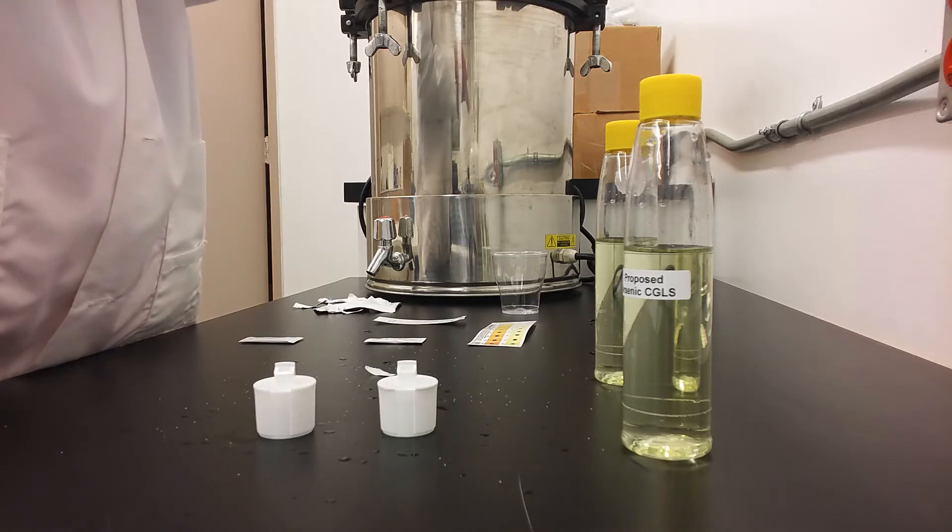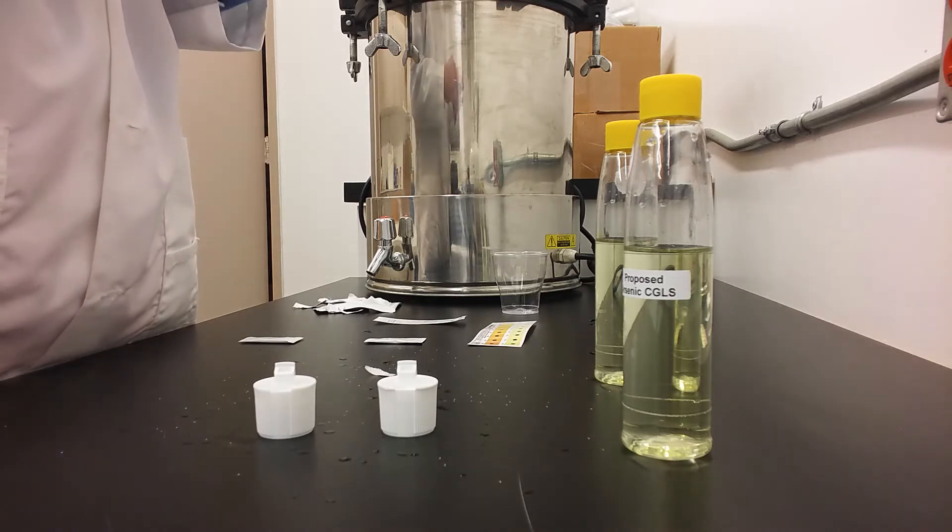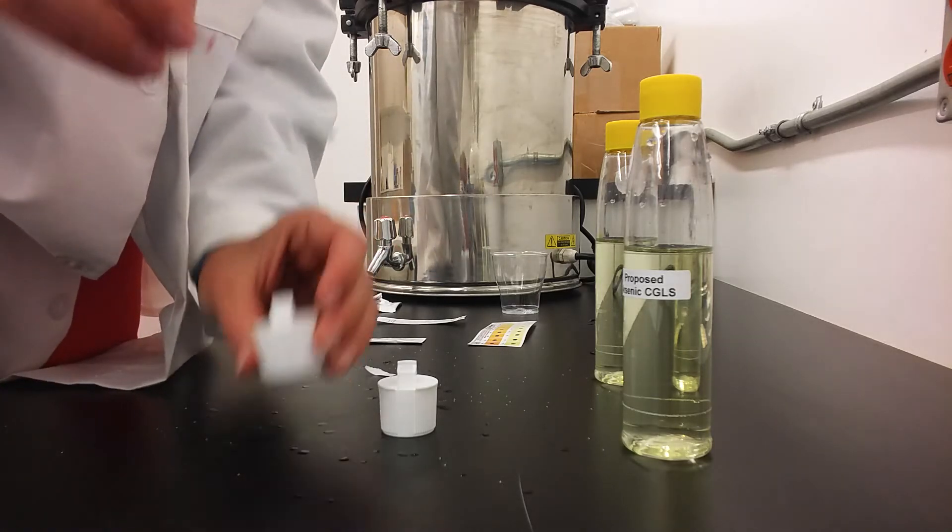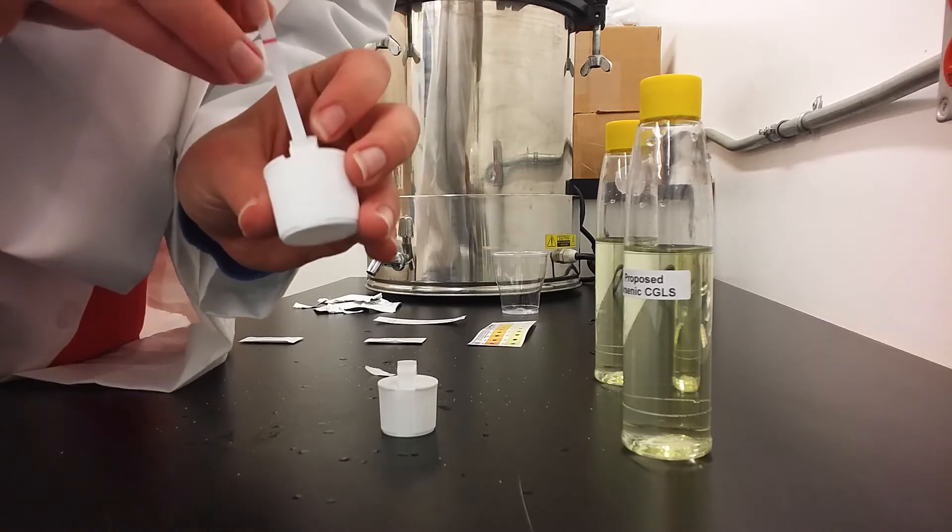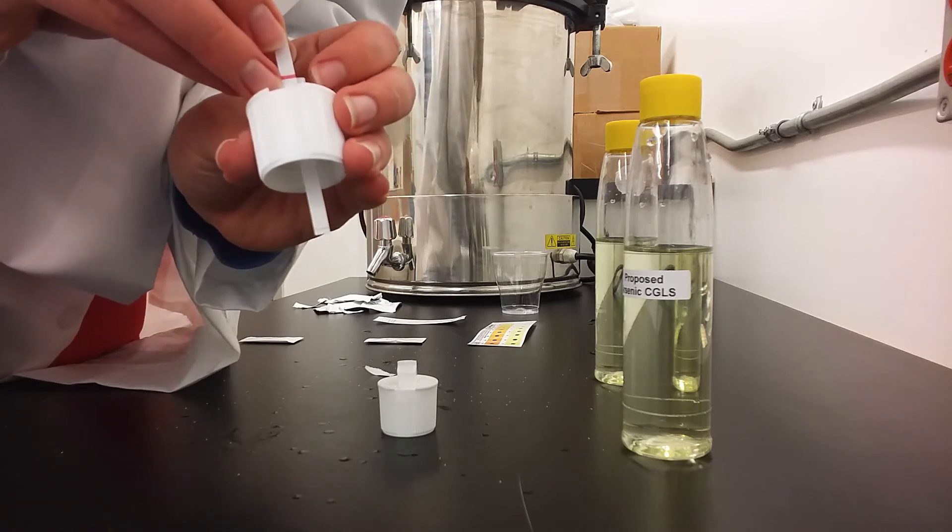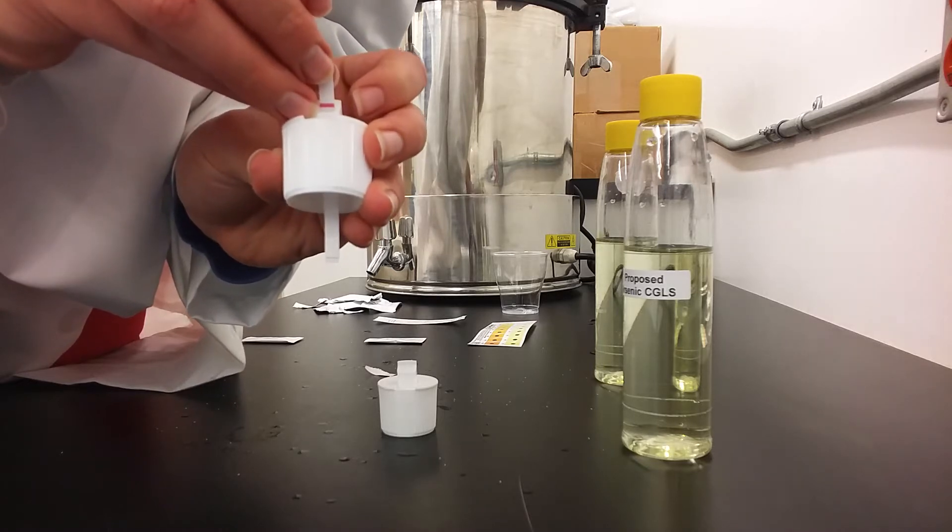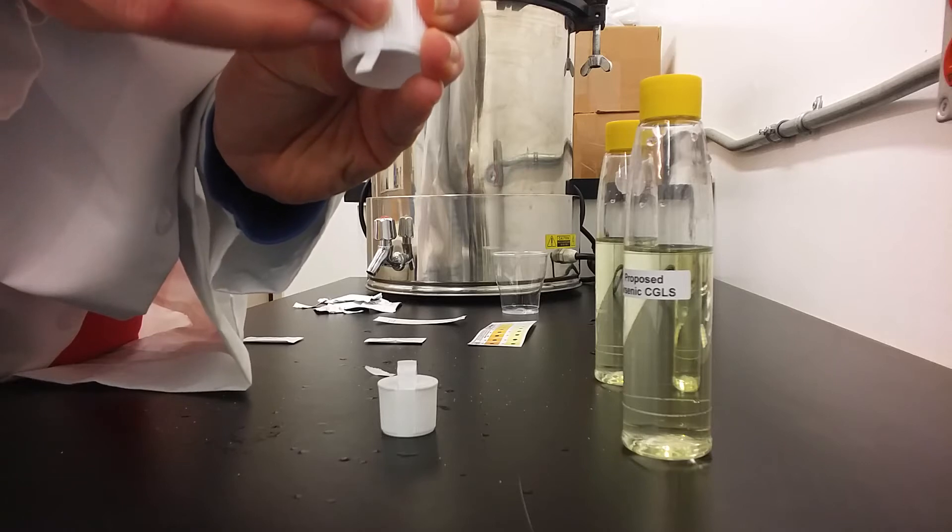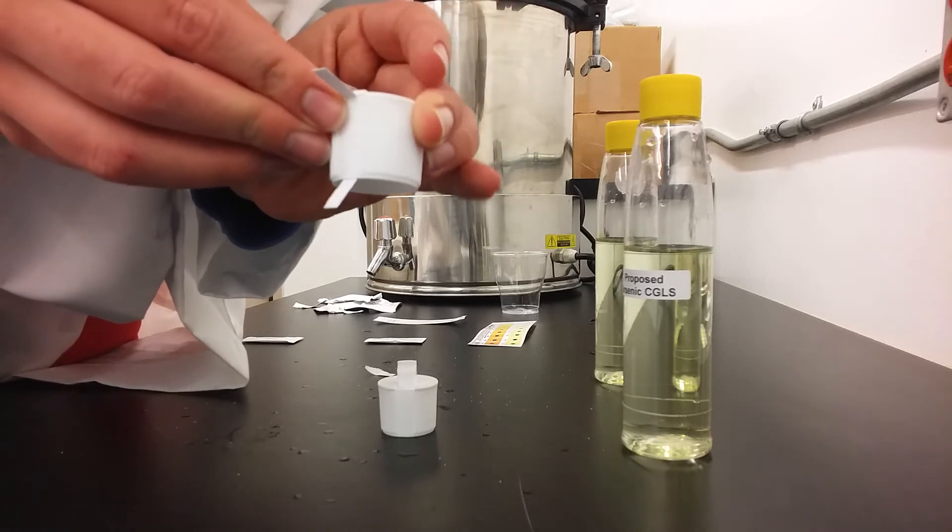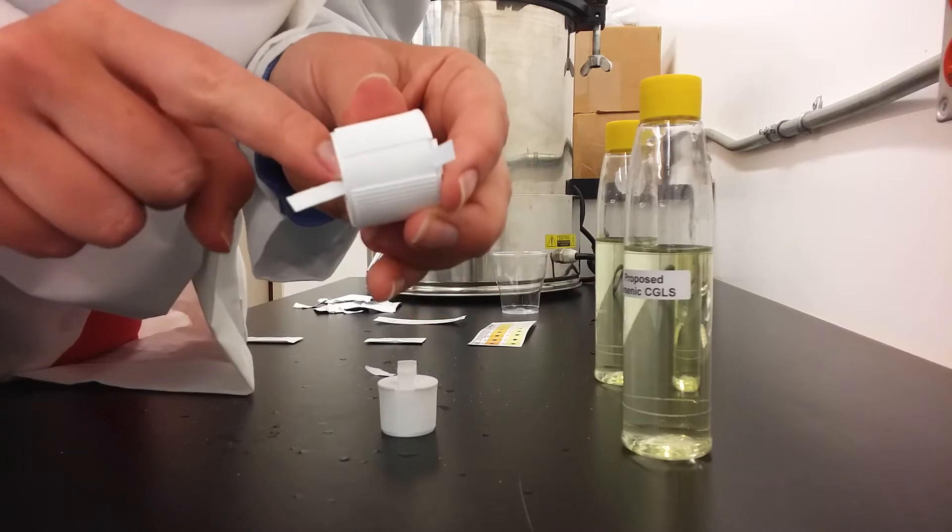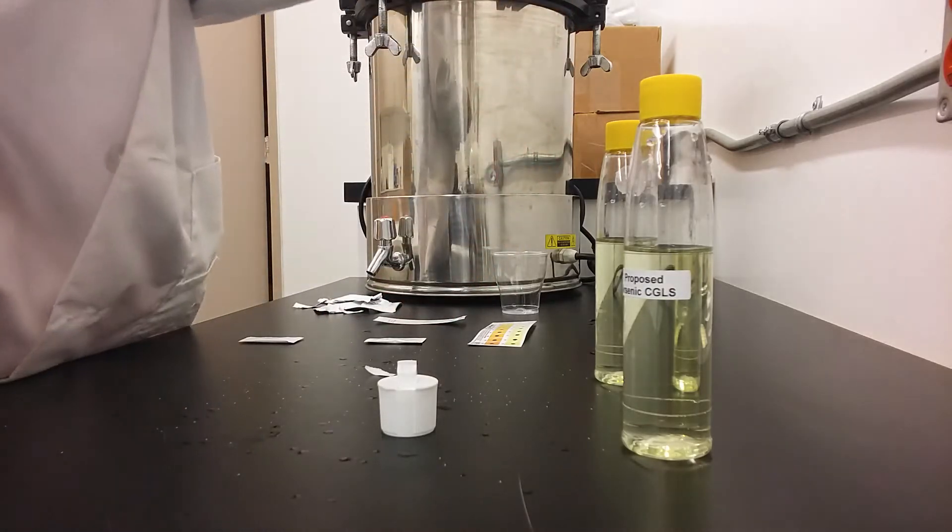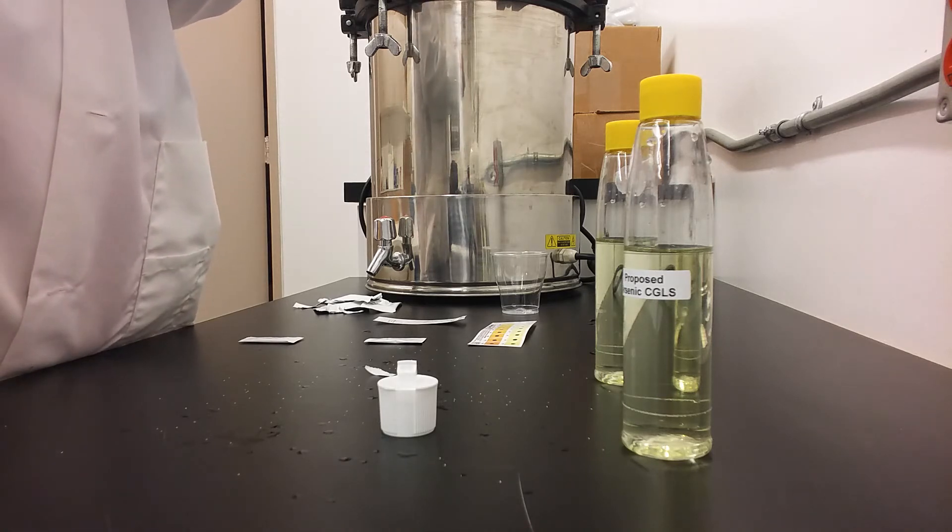You will remove the test strip from its packaging and then insert it into the white cap up until the red line. Then you will fold it over and close the cap. Once it is inserted, you will carefully adjust the strip so that it is pointed straight downwards from the cap.